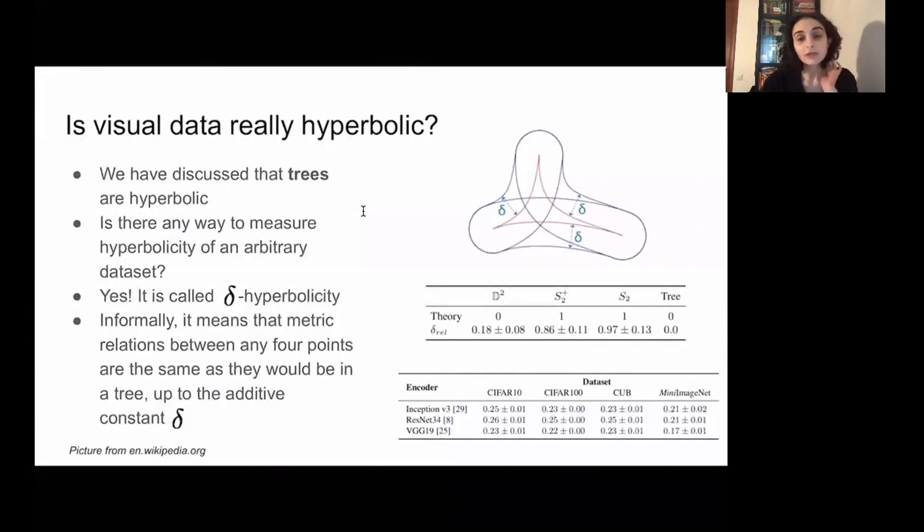The natural question is whether visual data is indeed hyperbolic. We propose to estimate a delta hyperbolicity which is informally an indicator of the dataset hyperbolicity degree. The normalized value of this delta lies between zero and one, where zero corresponds to purely hyperbolic space, for example trees, and one corresponds to non-hyperbolic space, for example sphere.